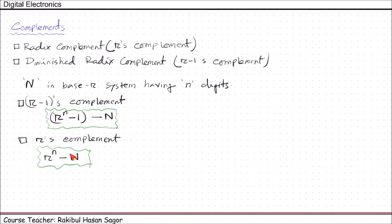If we are using the decimal system, there will be two types of complement: one is 10's complement, and the other is 10 minus 1, that means 9's complement. If we are using the binary system, there will be two types of complement: one is 2's complement, and the other is 2 minus 1, which is 1's complement. Using this generalized formula, we will be able to find the complements of any number system.